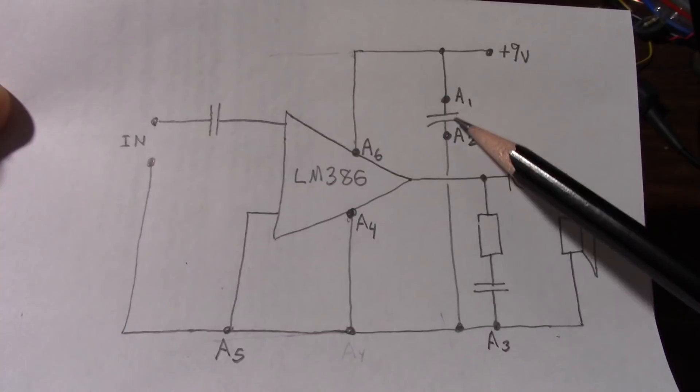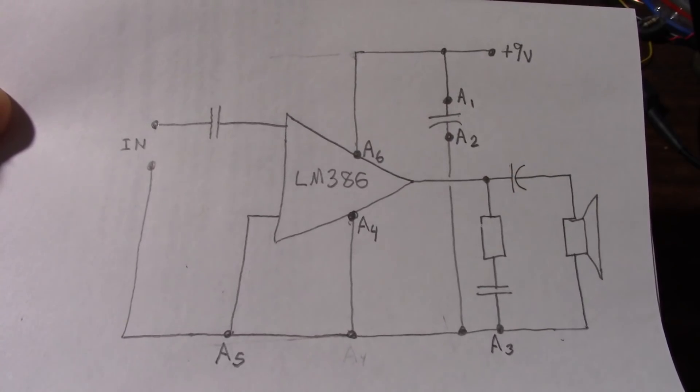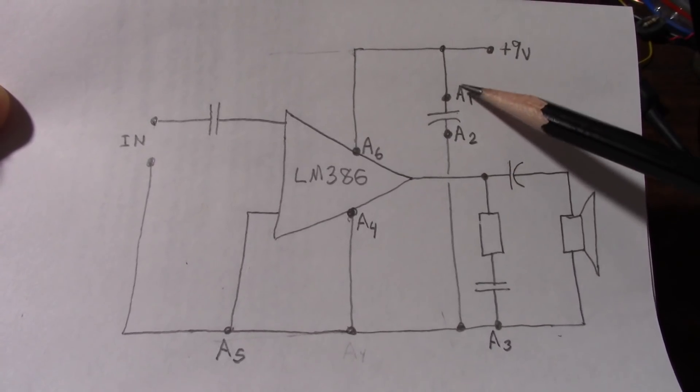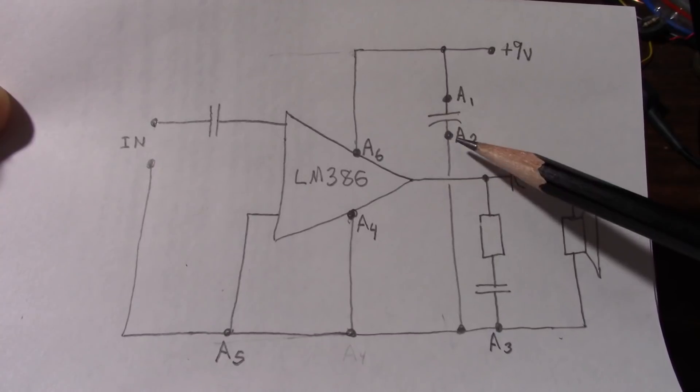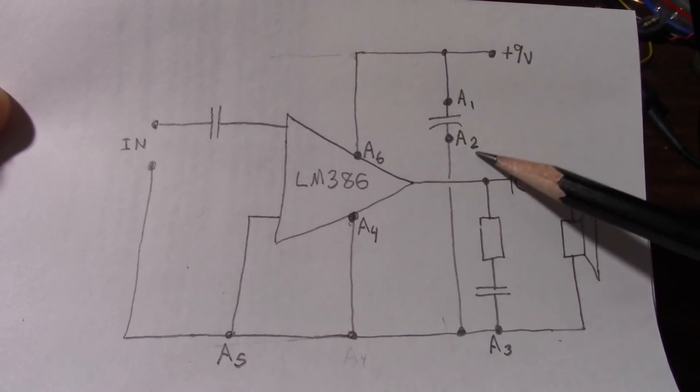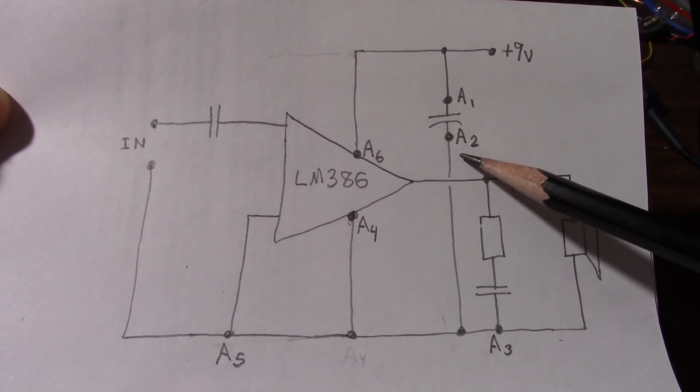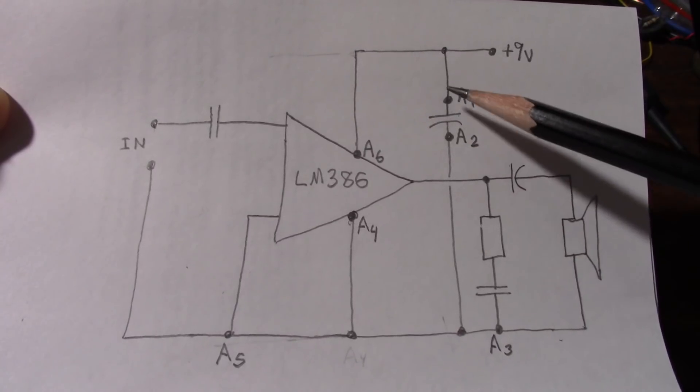So I marked the probing or scoping positions with A and then a sub number like A1 and A2 right across the supply rails.